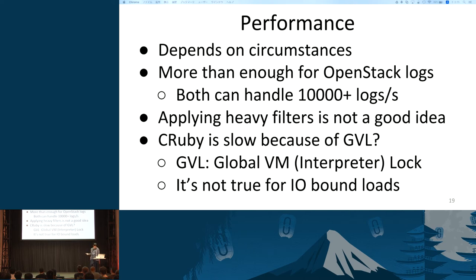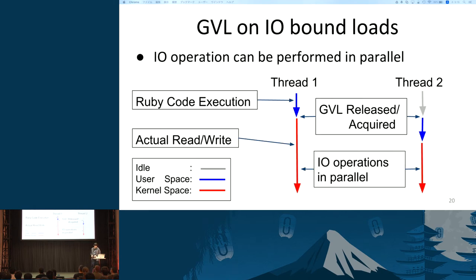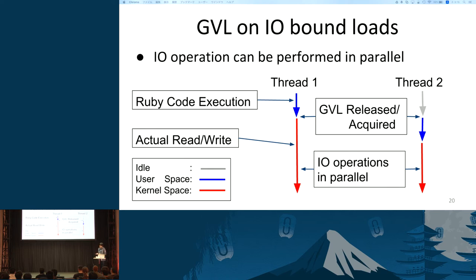I have heard many times that CRuby is slow because it has a GIL, and only one thread can run at the same time. That is not true, especially for IO-bound loads. This diagram shows two threads attempting to perform IO operations at the same time. When thread one is executing Ruby code, thread two has to wait for the GIL. However, the GIL is released just before actual read or write. Then thread two acquires the GIL to execute Ruby code, and actual IO operations can be performed in parallel.